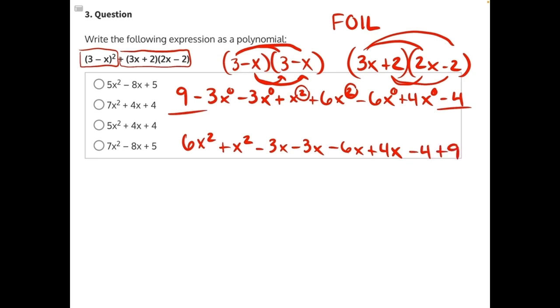And now it's much easier to see what our like terms are so that we can combine. 6x squared plus x squared, there's always one of them. So 6 plus 1 will give us 7x squared.